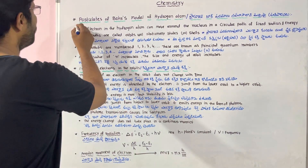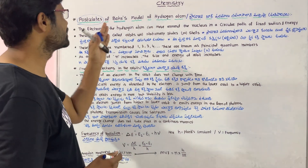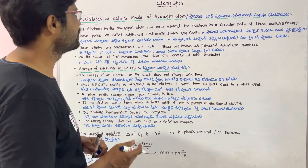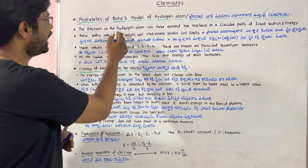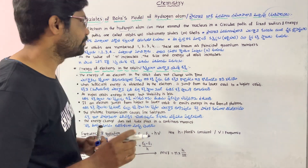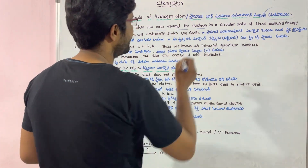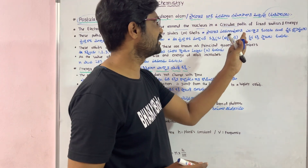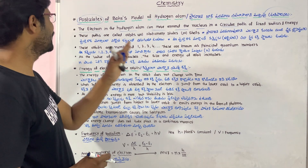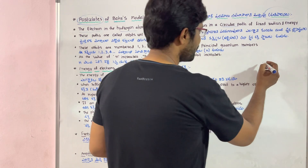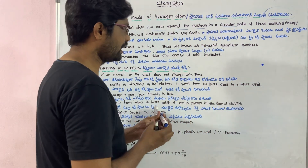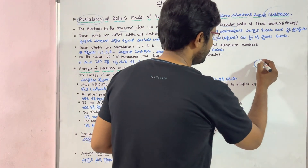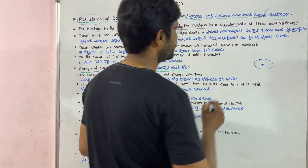Let's talk about Bohr's model of hydrogen atom. The first point is that the electron in the hydrogen atom can move around the nucleus in a circular path of fixed radius and fixed energy. The electron travels in a circular path around the nucleus.